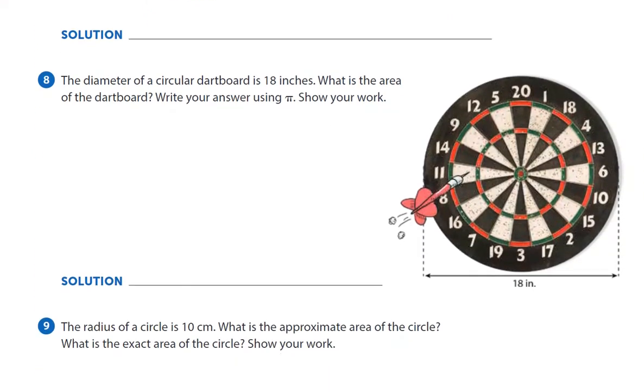Number 8. The diameter of a circular dart board is 18 inches. What is the area of the dart board? Write your answer using pi. So if the diameter is 18 inches, then the radius is 9. Because we've got to cut it in half. So area equals pi times radius squared. The radius squared is 9 times 9, which is 81. So area equals 81 pi.